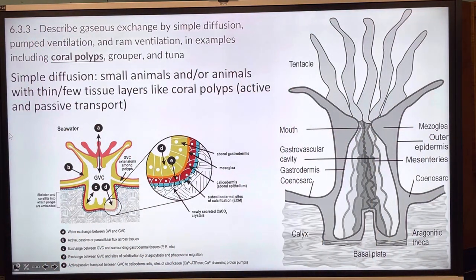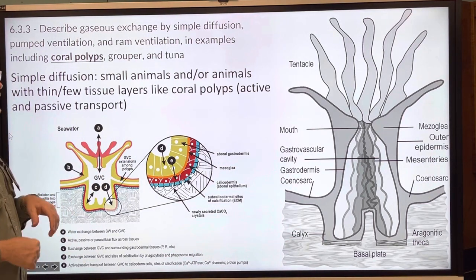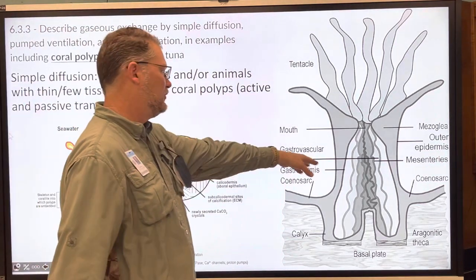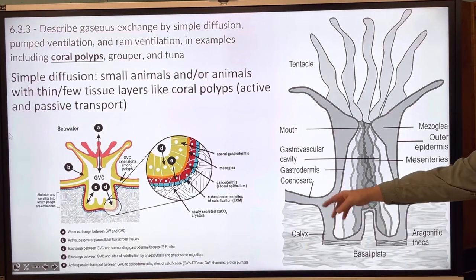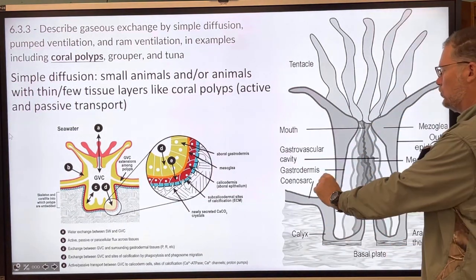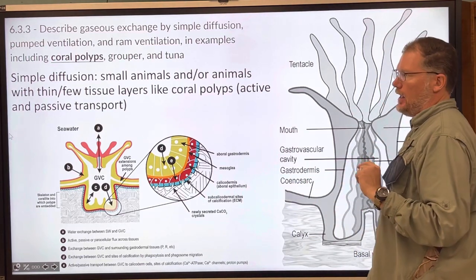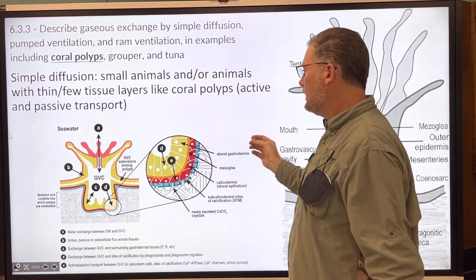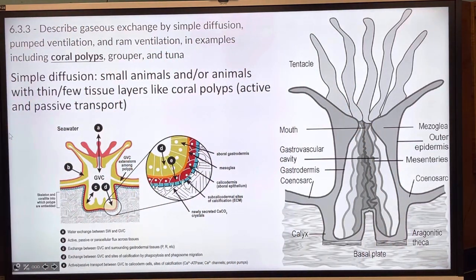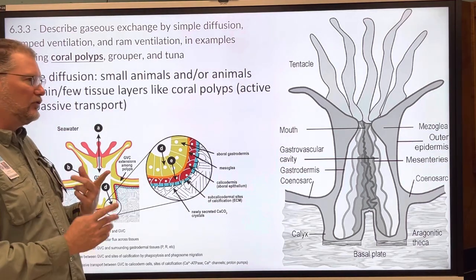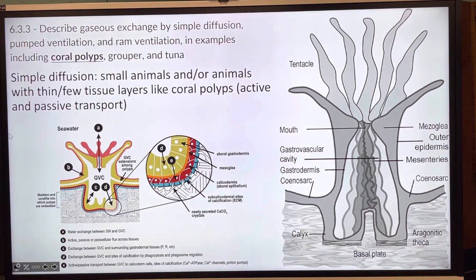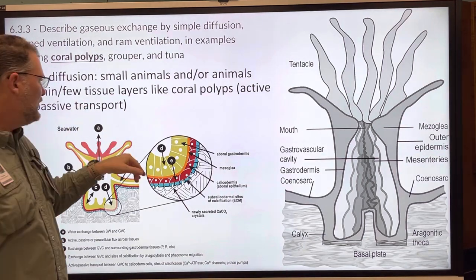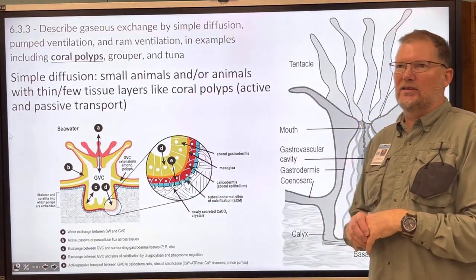Invertebrates like coral polyps and anemones — which are very similarly related, an anemone being like a bigger version — have tentacles, nematocysts, and a gastrovascular cavity. Simple diffusion is how these organisms absorb gases from the outside environment. That's essentially how they breathe; they don't have gills, they don't have lungs.